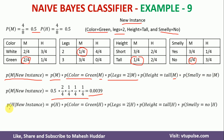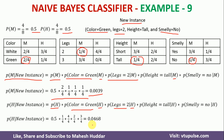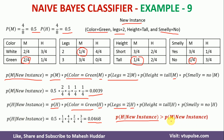Similarly, for P(H | new instance), we compute: P(H) × P(color=green | H) × P(legs=2 | H) × P(height=tall | H) × P(smell=no | H), which gives 0.0468. Comparing the two values, P(H | new instance) is greater than P(M | new instance), so the new example is classified as species H.